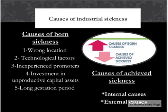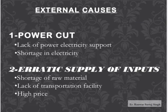Coming to causes of acquired sickness: there are internal causes and external causes. For external causes, number one is power cut — lack of electricity support and shortage in electricity. Second is erratic supply of inputs: shortage of raw material, lack of transportation facility, and high prices.